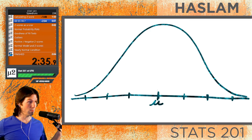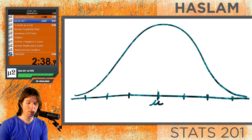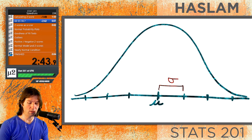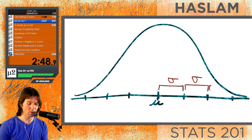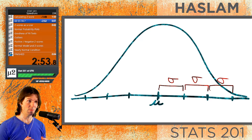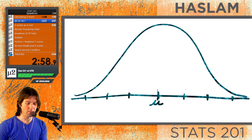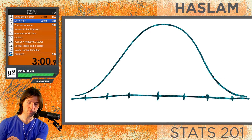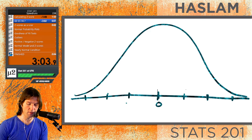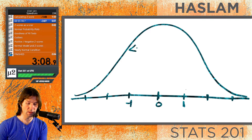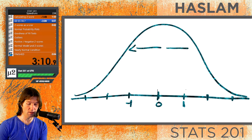The mean is at the center of the curve, and then going up we mark one standard deviation, a second standard deviation, and a third standard deviation. Things can be more than three standard deviations away, but they would definitely be outliers at that point. Within plus or minus one standard deviation we encompass 68% of the data.